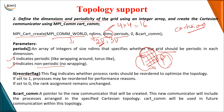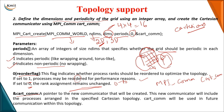You can also change the order of processes in the topology using a reorder flag. If set to 1, a process may be reordered for performance reasons; if set to 0, the rank assignment remains unchanged. The output is an abstract Cartesian communicator, declared as MPI_Comm and named cart_comm — this is the handle used for Cartesian grid creation.